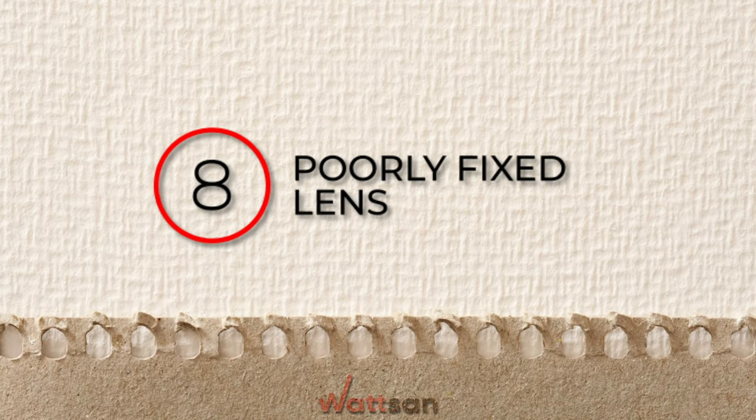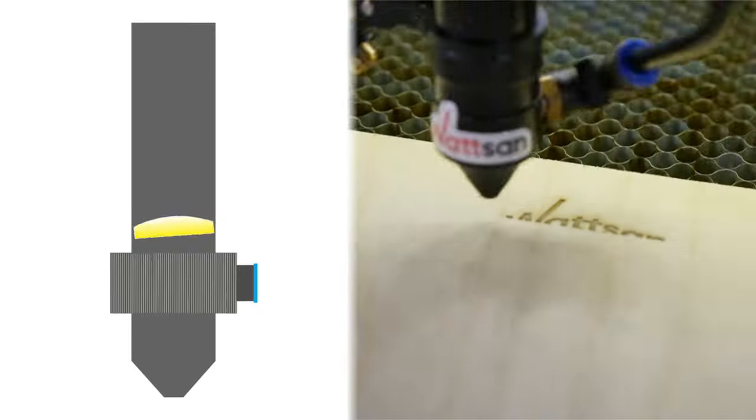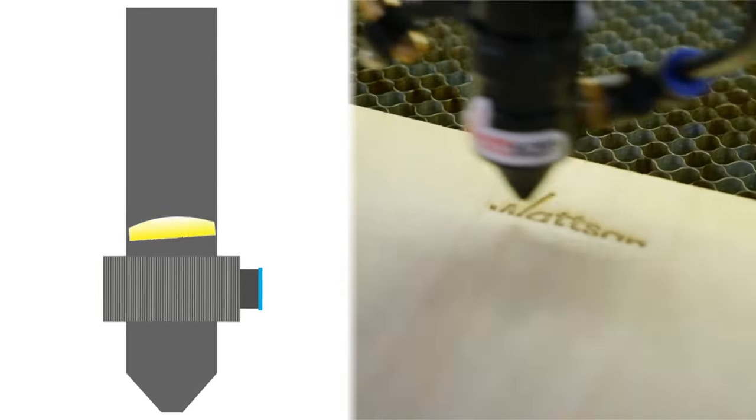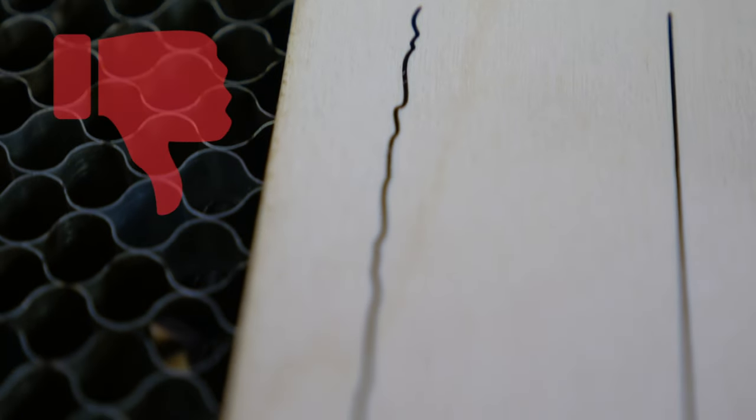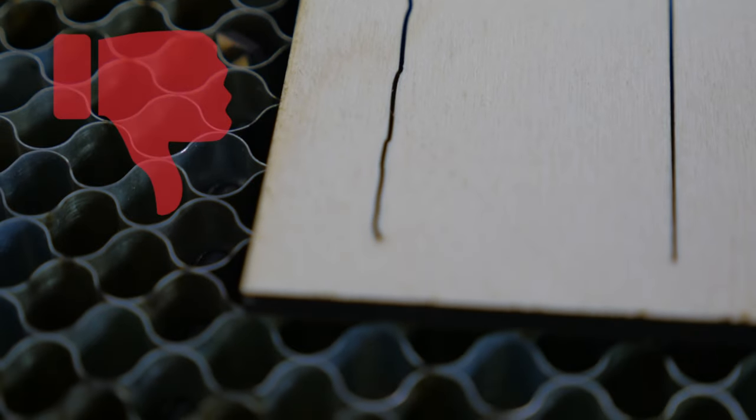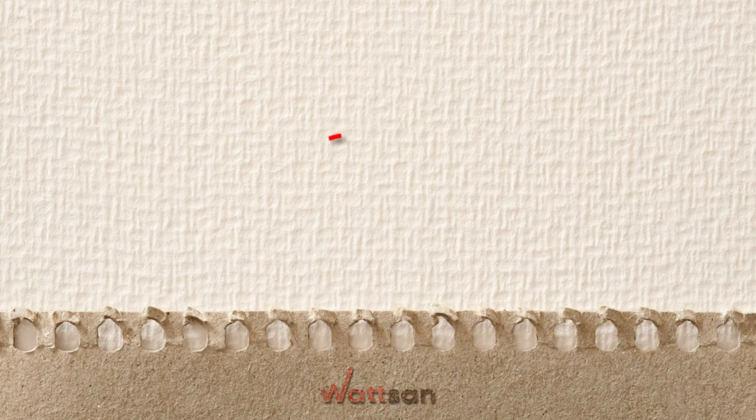8. Poorly fixed lens. Sometimes it happens that the lens is not properly fixed when cleaning or replacing it. Then, during operation, when the laser head moves, the lens vibrates, which results in uneven cutting.